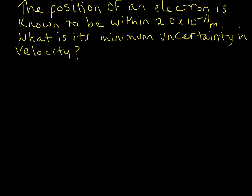Here is a Heisenberg uncertainty principle example problem. This one is a little different in that we're given the position of an electron — we're given a range — and then we're asked for its minimum uncertainty in velocity. So we're going to do something just a little bit different with this one.